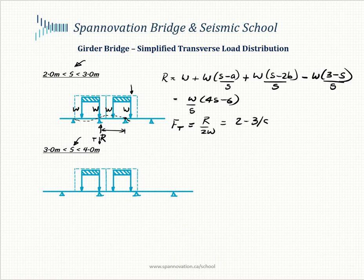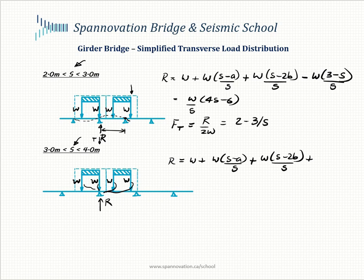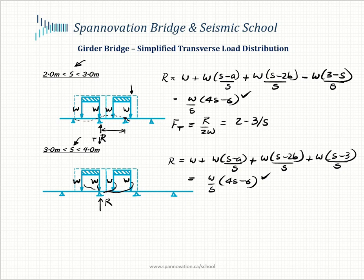This gives Ft equal to 2 minus 3/S. For the wider girder spacing case between 3 and 4 meters, all four wheel lines give a positive contribution to the reaction. R equals W plus W(S minus A)/S plus W(S minus 2B)/S plus W(S minus 3)/S, which also simplifies to W/S times (4S minus 6), interestingly the same result. This again gives Ft equal to 2 minus 3/S, which becomes the controlling formula.